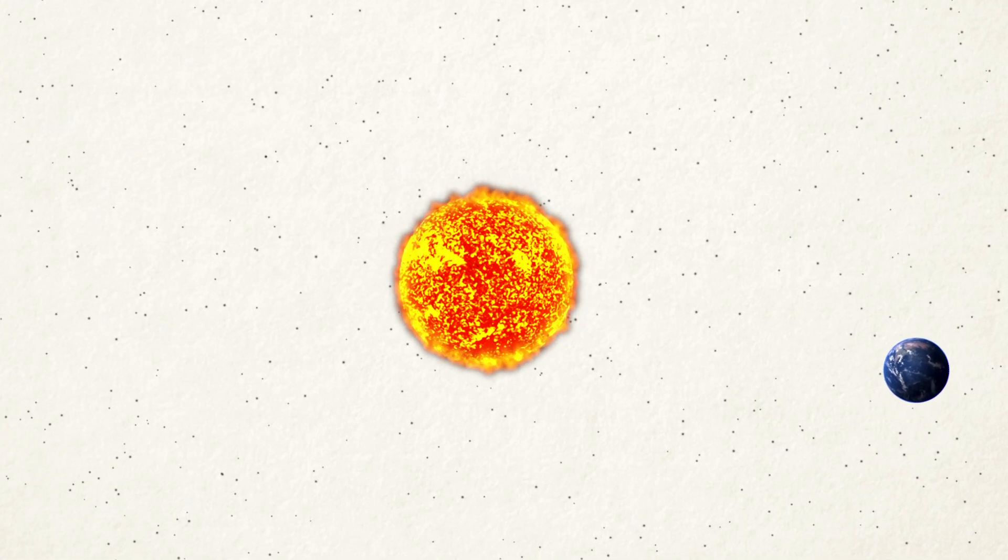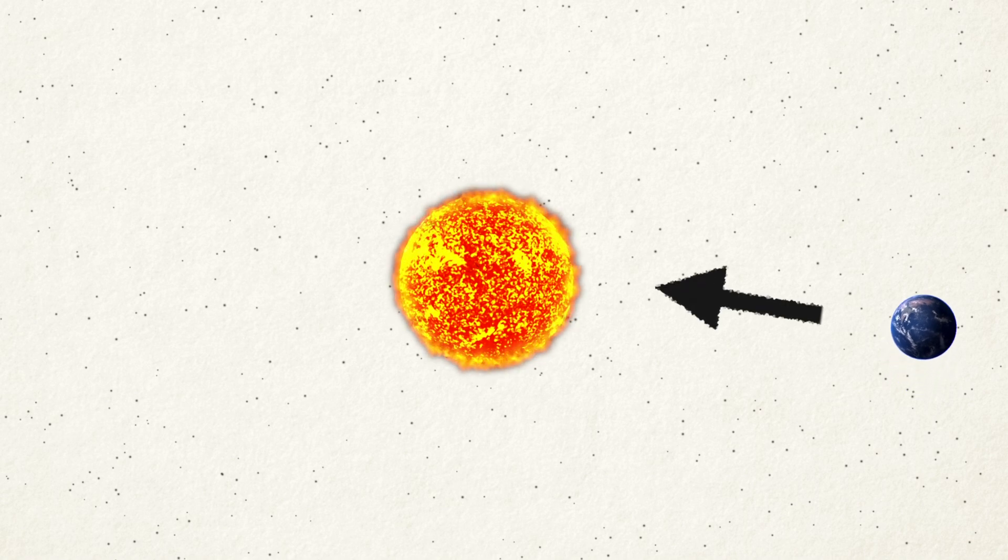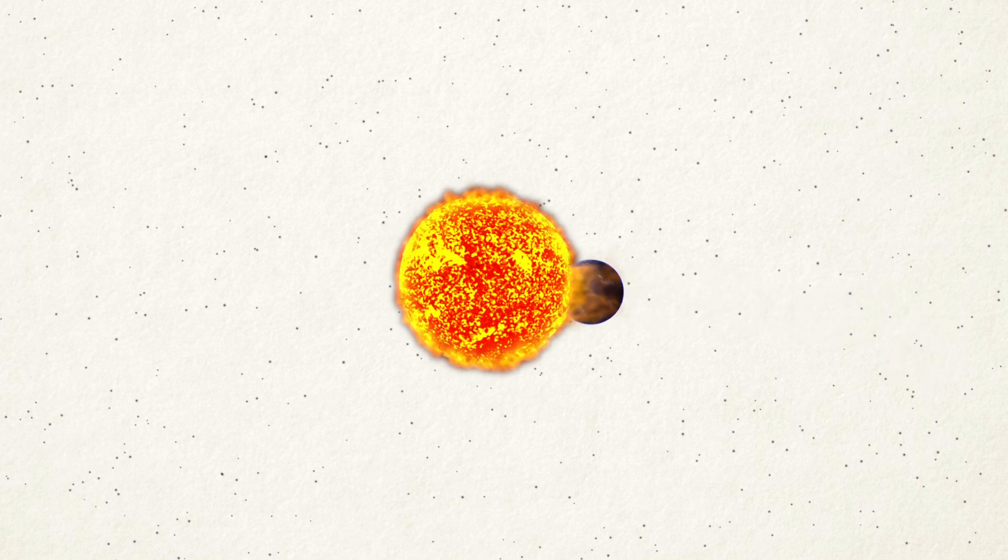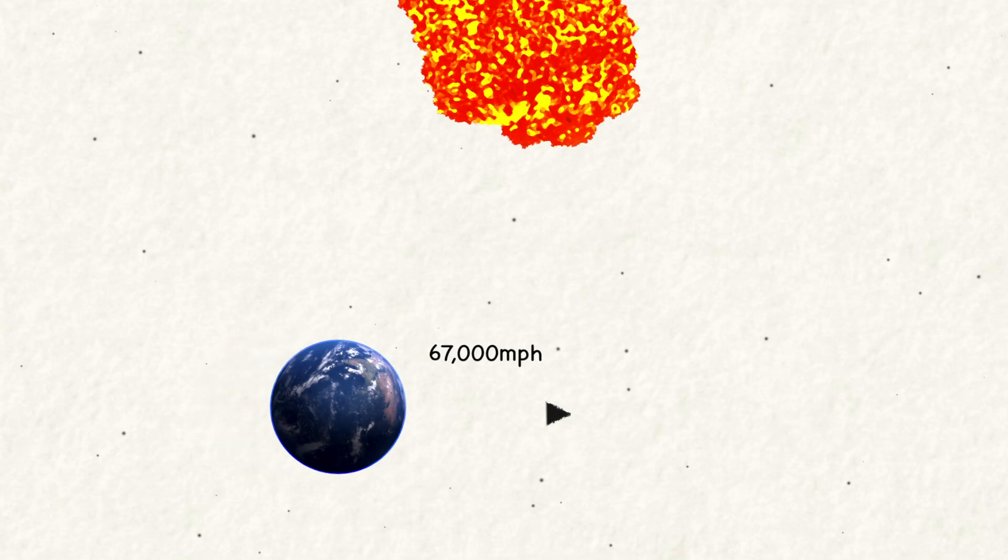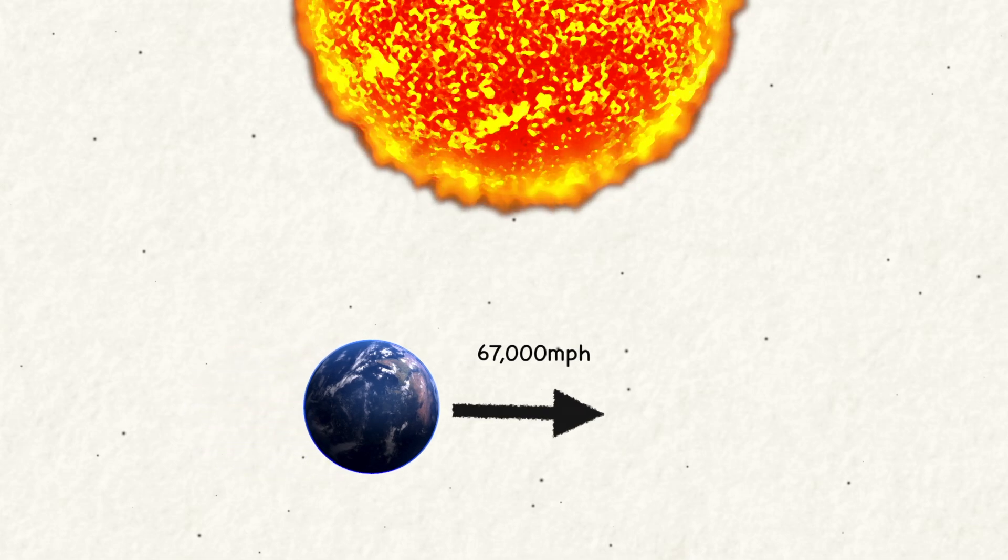The answer is related to why Earth doesn't just fall straight into the Sun, despite the strong gravitational attraction. Earth, and everything on it, is traveling very fast, about 67,000 miles per hour, in a direction that is basically always sideways relative to the Sun.